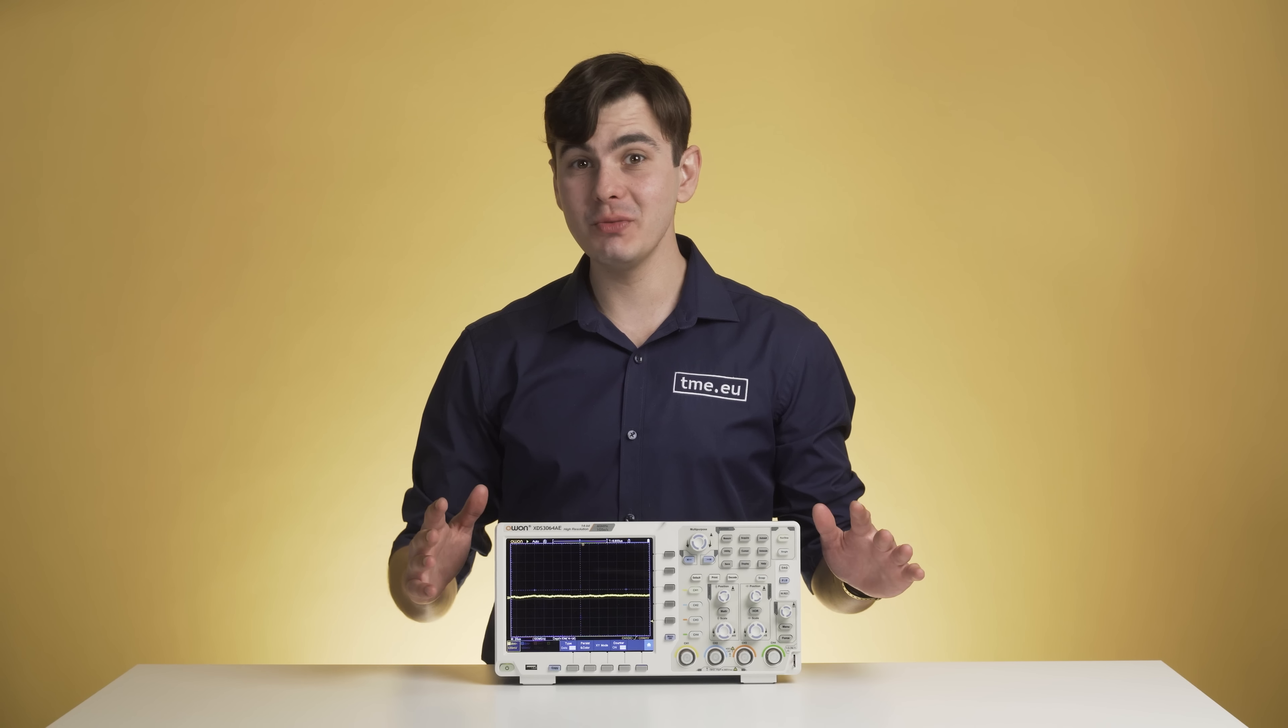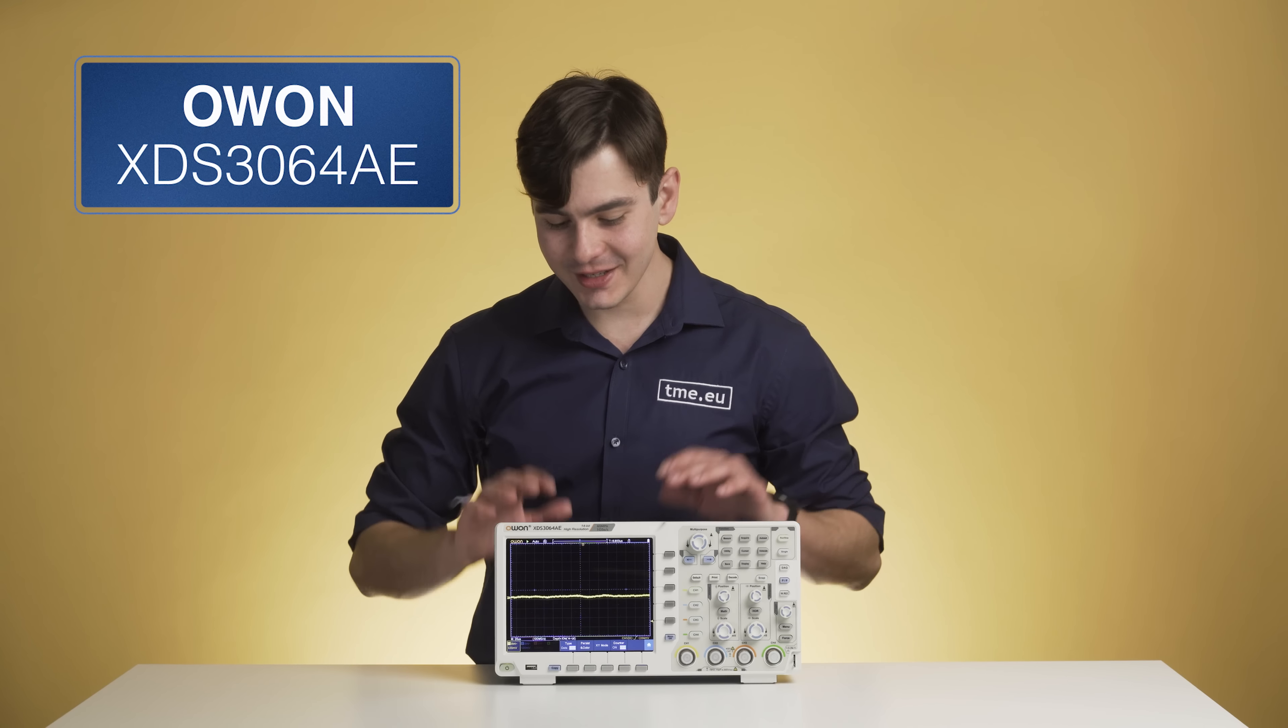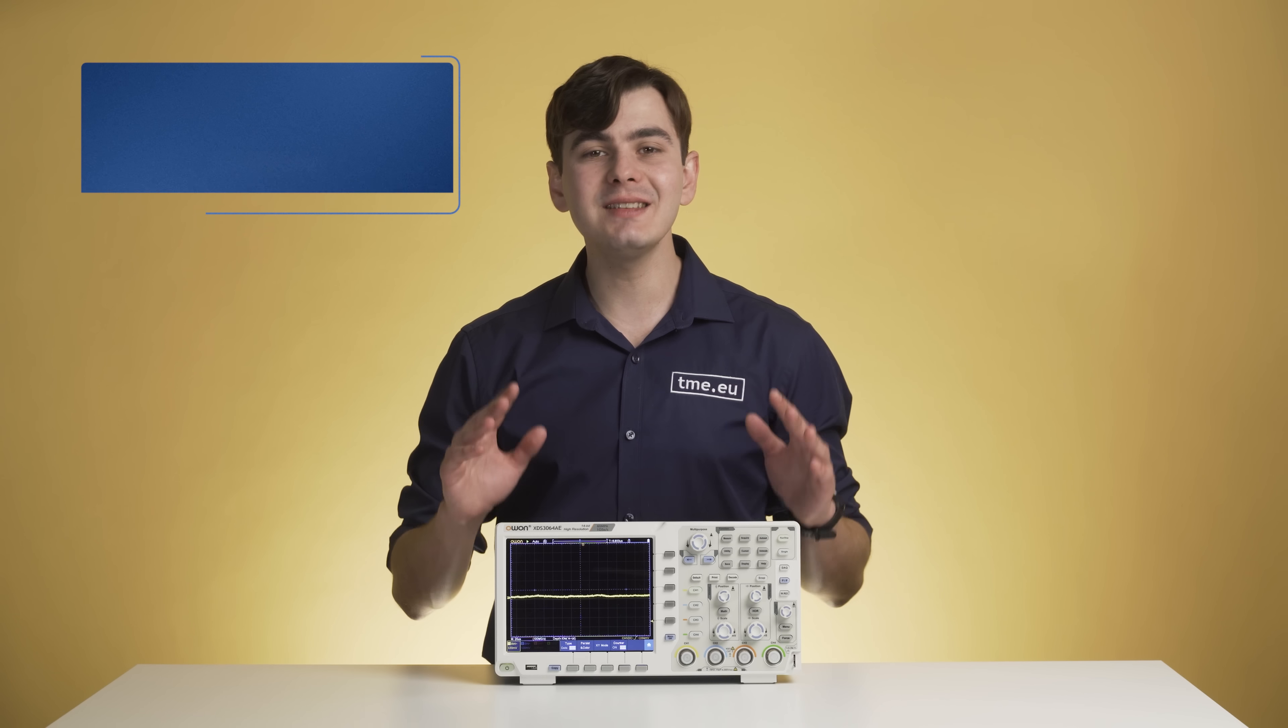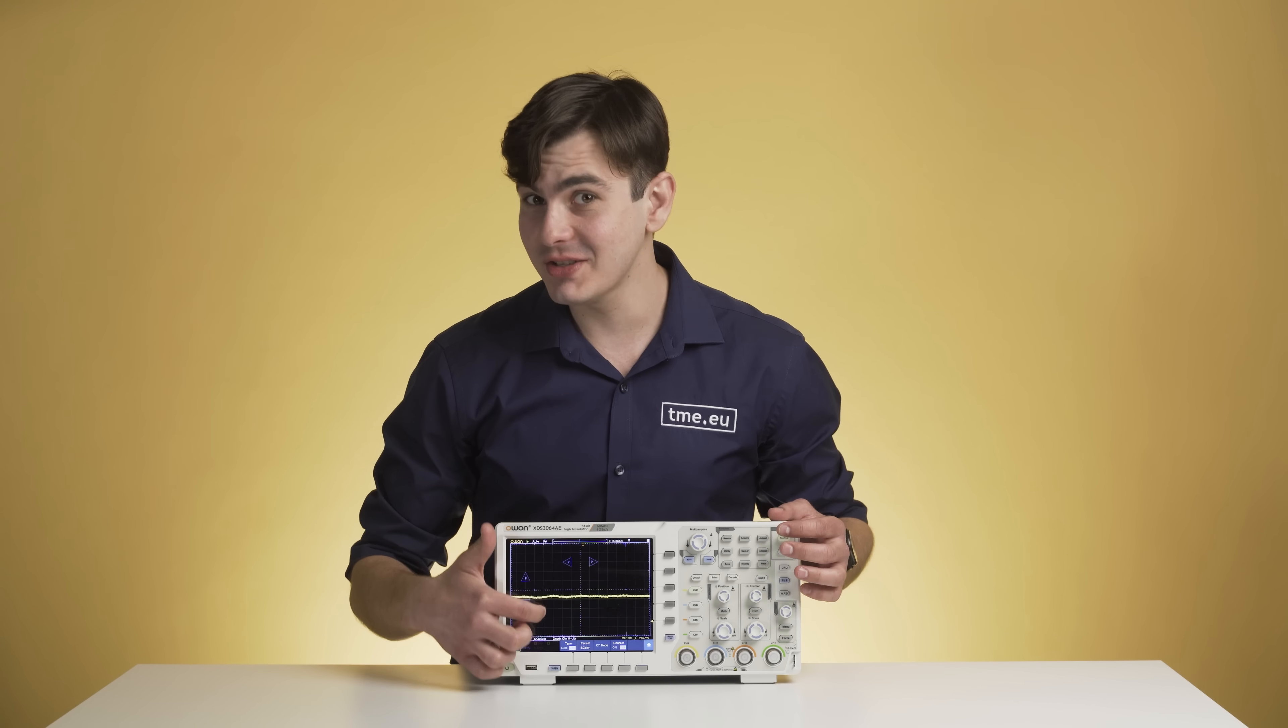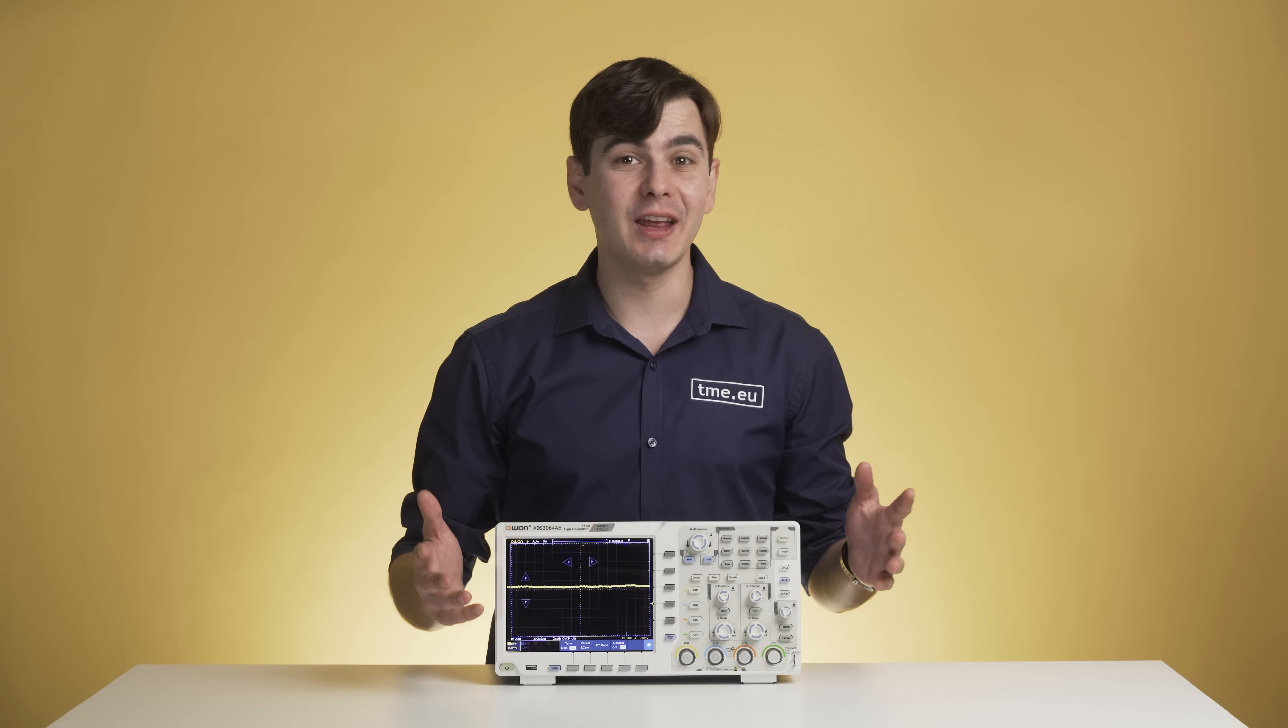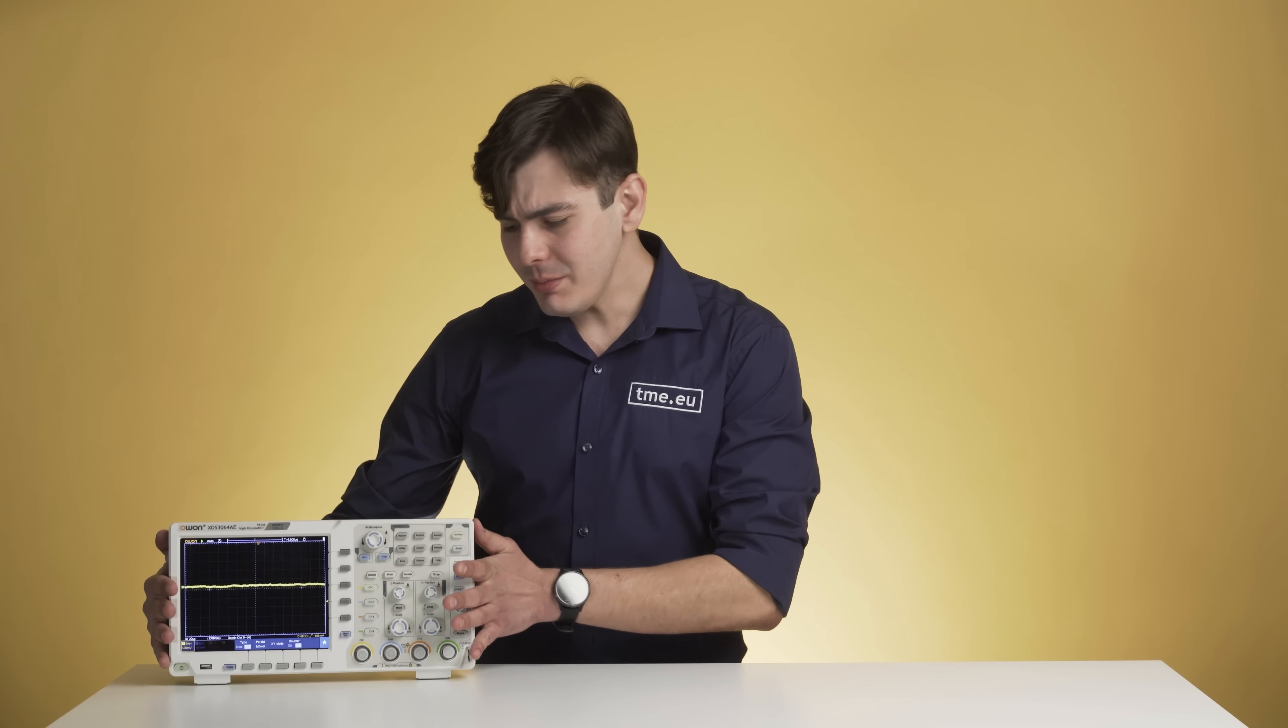For demonstration purposes only we'll be using this XDS3064AE, but it doesn't mean that you have to invest so much money in your first oscilloscope with touchscreen, 1 giga samples per second, 14 bits resolution. It is tempting, but maybe a second-hand two-channel scope will be nice and dandy for your requirements.